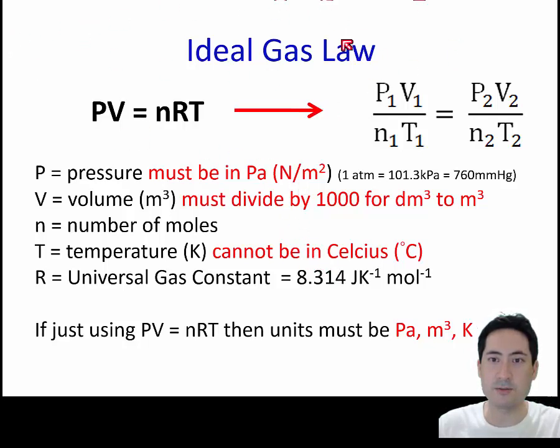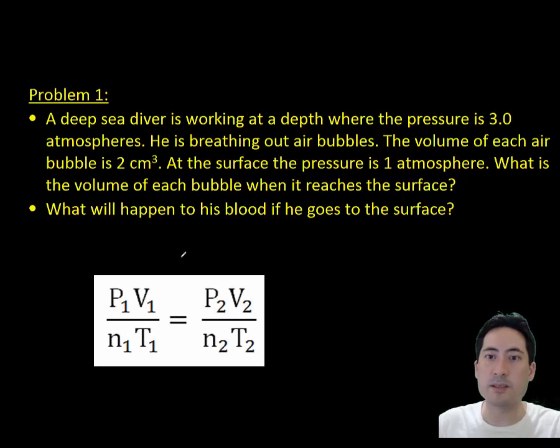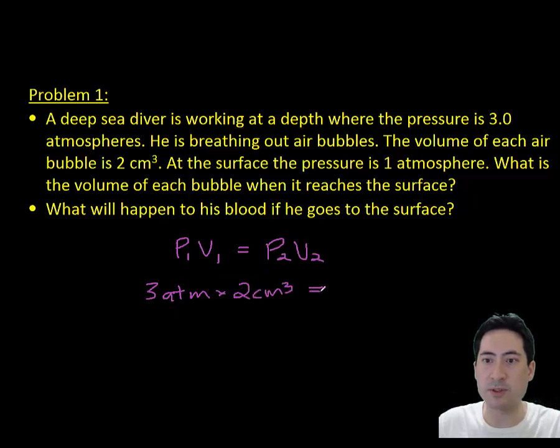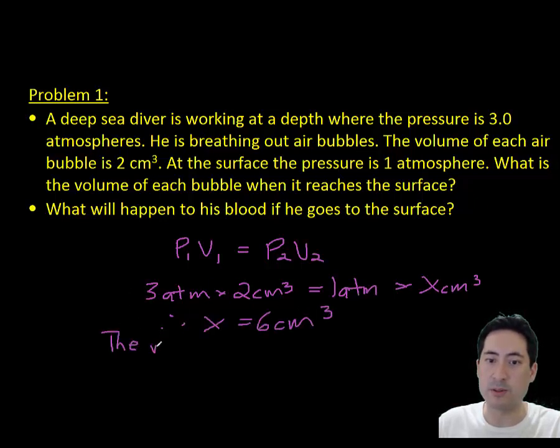The first problem is just a simple pressure-volume problem. You use the combination of the ideal gas law to get P₁V₁ equals P₂V₂. You can sub those in and you should realize that because the pressure is decreasing, the volume should increase. You go from 2 centimetres cubed to 6 centimetres cubed. The volume of the bubble is getting bigger and that could possibly cause death and various other blockages in your blood system called the bends.